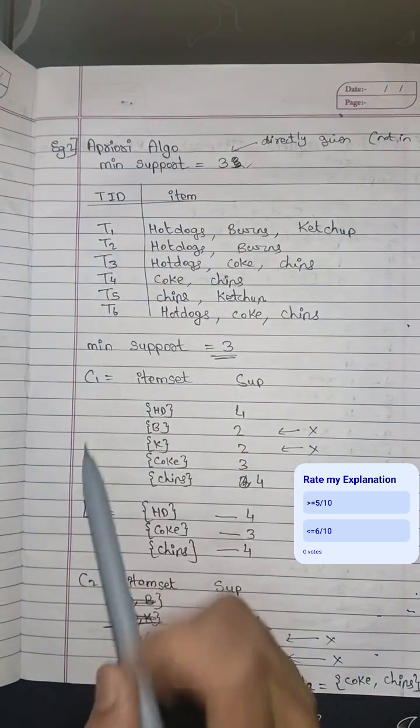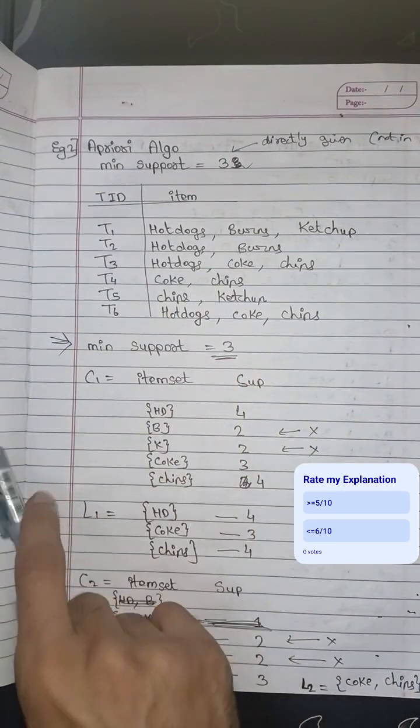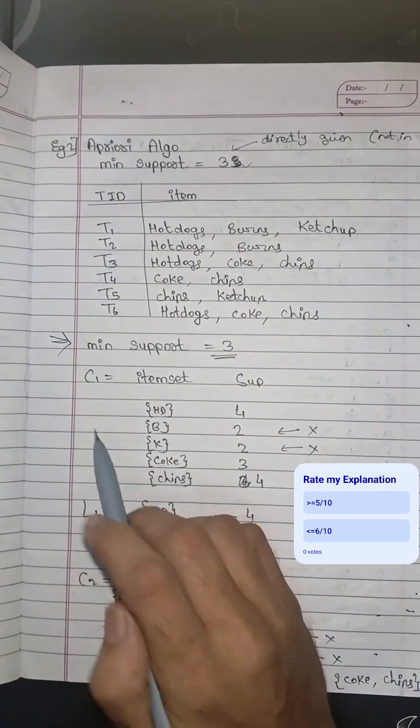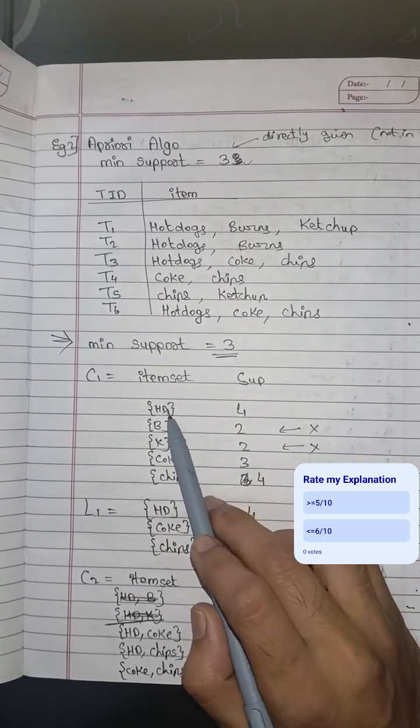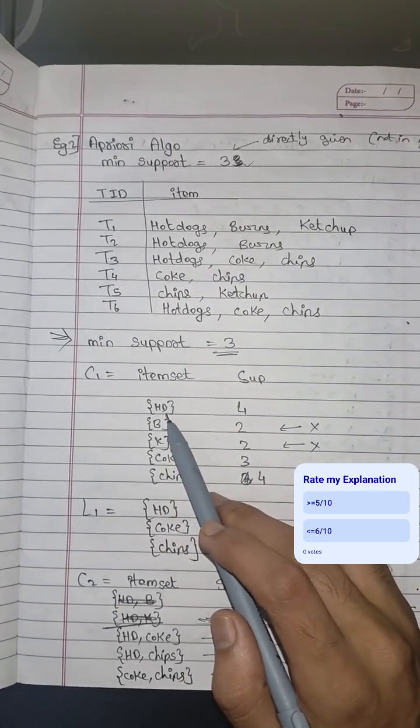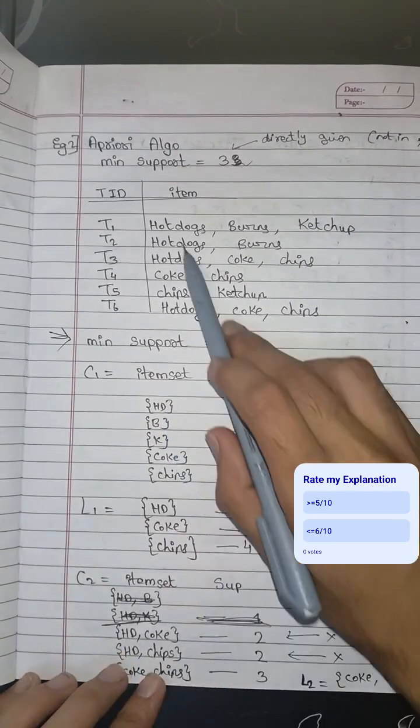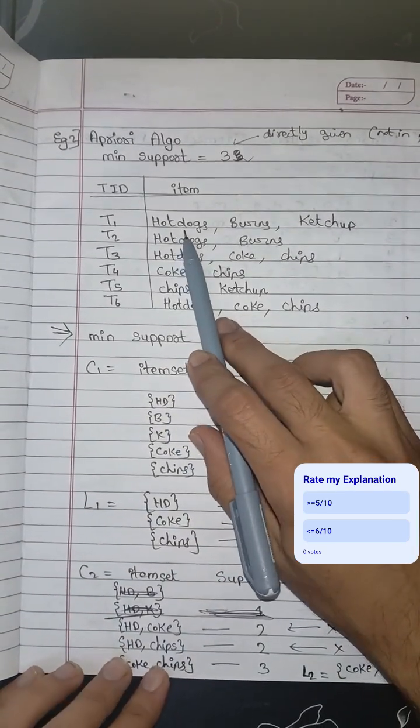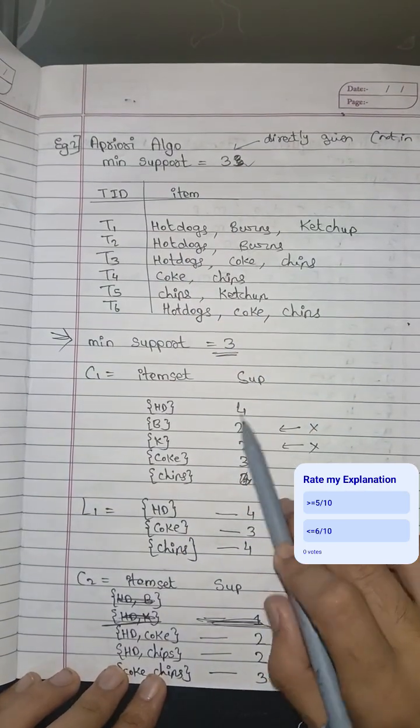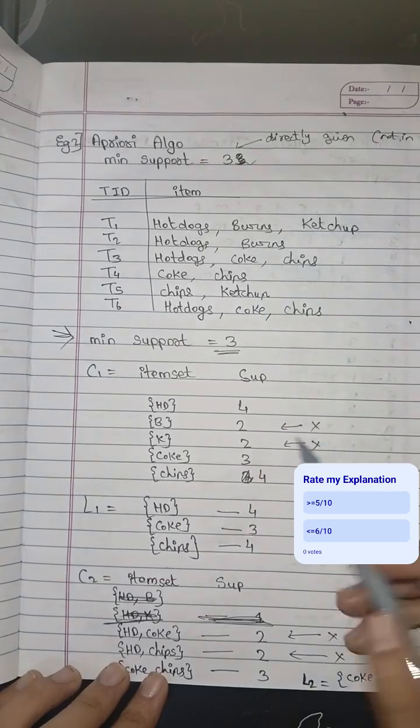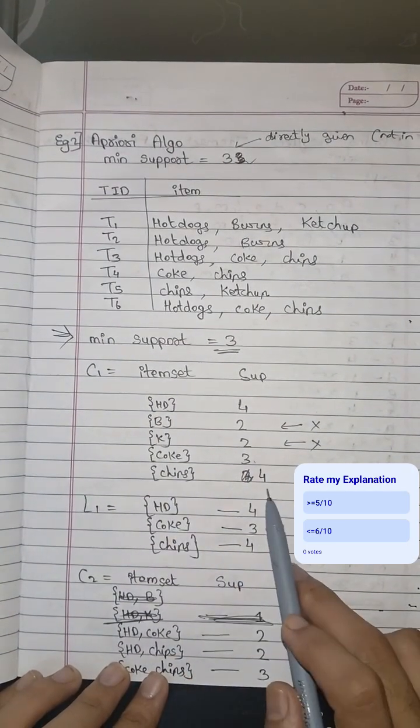Let us jump to the answer. Support is 3. Our first cluster is itemset and support. It will be first one element combination. HD I have shortened for hot dogs. Hot dogs is appearing 1, 2, 3, 4 times. B means burger is 2 times. Ketchup 2 times. Coke 3. Chips 4 times.